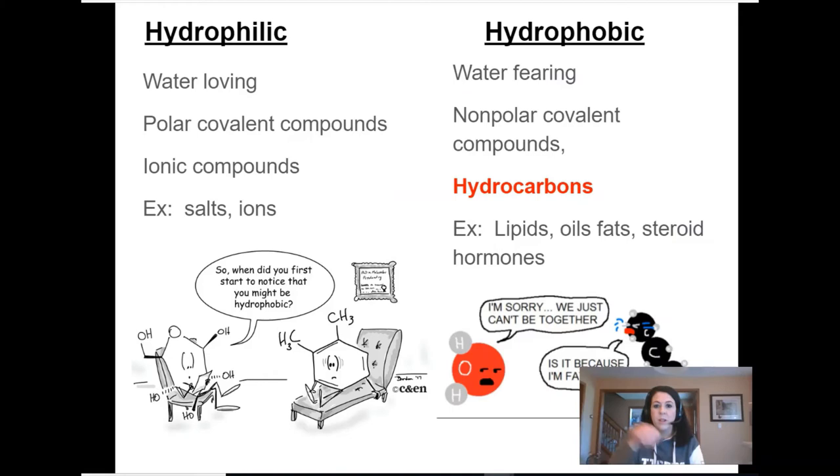Your Google form assignment is to identify if something is hydrophobic or hydrophilic. If it's hydrophilic, it likes water and dissolves well. These include ionic compounds, ions and salts with a full charge, and other polar covalent compounds like ammonia. Anything with a charge dissolves well in water. Things without a charge are hydrophobic, water-fearing, non-polar covalent compounds.